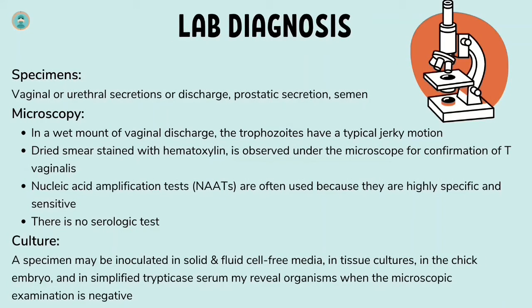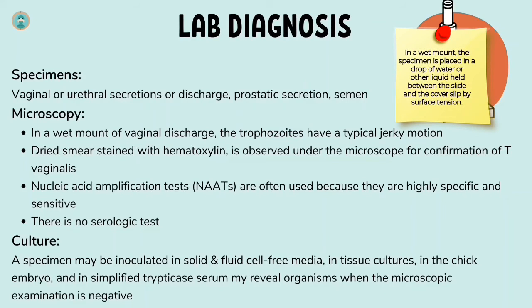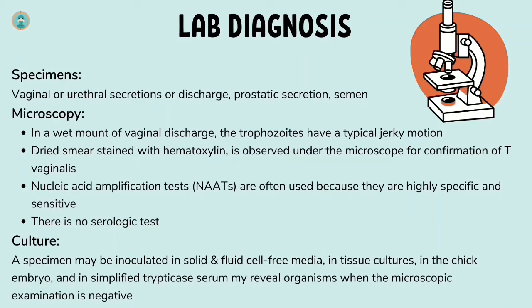For laboratory diagnosis, specimens collected include vaginal or urethral secretions or discharge, prostate secretions, and semen. For microscopy, in a wet mount of vaginal discharge the trophozoites have a typical jerky motion. Dried smears stained with hematoxylin are observed under the microscope. For confirmation of Trichomonas vaginalis, nucleic acid amplification tests (NAATs) are often used because they are highly specific and sensitive. There is no serologic test available.